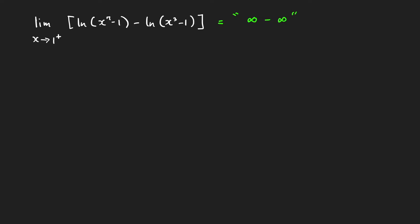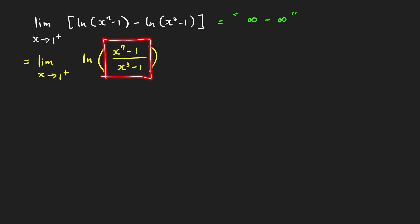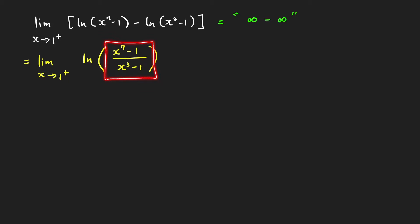We can do that using properties of ln. So we write this as the limit as x approaches 1 from the right of ln of the quotient, since the difference of logs equals the log of a quotient. So we have ln of (x⁷ - 1) over (x³ - 1). Now, what is the limit of the expression inside the ln? The numerator goes to 0 and the denominator goes to 0, so this expression has the indeterminate form 0 over 0.